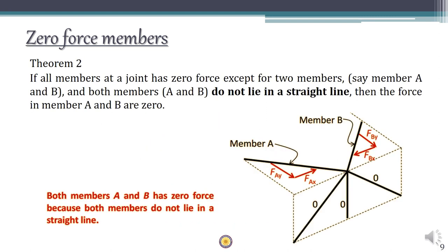The second theorem says that if all the members at a joint have zero force except the last two, and both those remaining members do not lie in a straight line, then the forces in those two remaining members are also zero. For example, if five members meet at a joint and three of them are already known to be zero force members, and the remaining two members are not collinear, then those two remaining members are also zero force members.